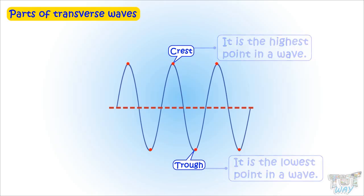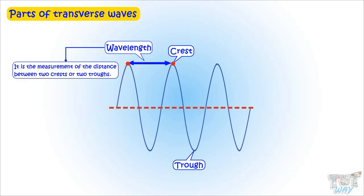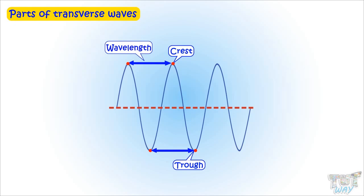Next is the wavelength of a transverse wave. It is the measurement of distance between two crests or two troughs. Like this, that is between two points, this is one wavelength. You can also measure it here, that is between two troughs.